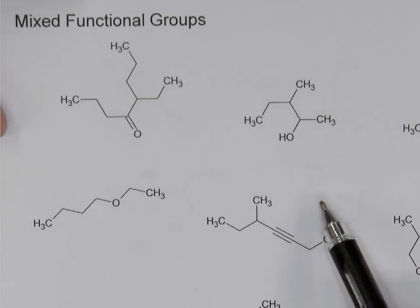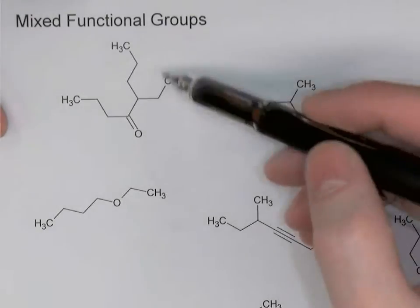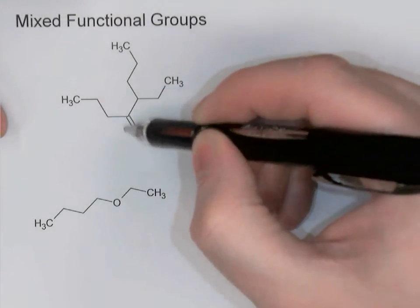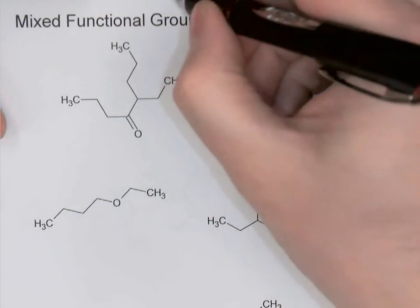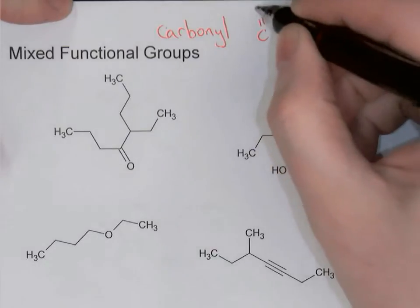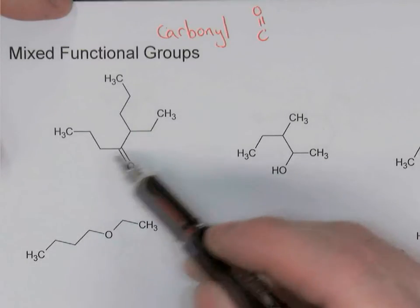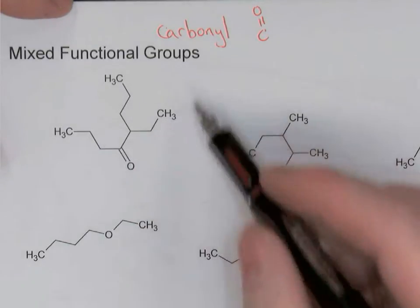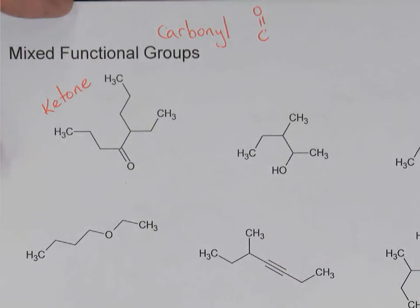So let's start. For each one we want to identify what functional group is present, and then based on that, we'll derive the name of the molecule. In this first example, the functional group that jumps out is this carbon with a double bond O to it — that's called a carbonyl group. A carbonyl is a C double bond O. When that carbonyl group is not at the end of a chain but somewhere in the center of the chain, then this is called a ketone.